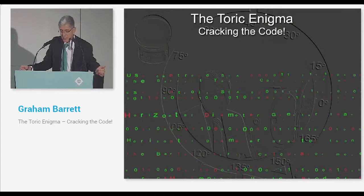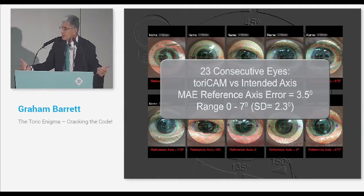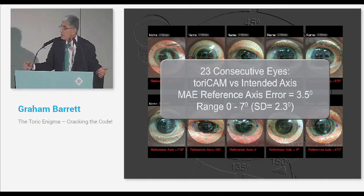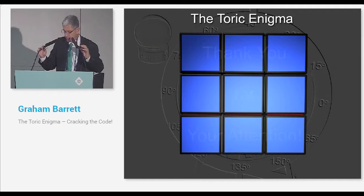So, Toric Enigma, cracking the code. In summary, as we discussed, SIA is important. Keep your incision small. Keep it on one location. Use Warren's calculator to find out how much it is. Axis, be as accurate as you can. And here's a solution which I think is appropriate to the size of the problem, because it's not the major factor. And of course, consider using an improved calculator. So thank you for your attention.